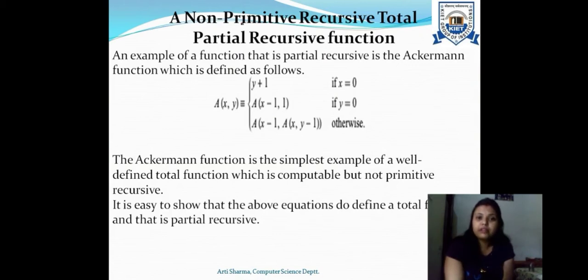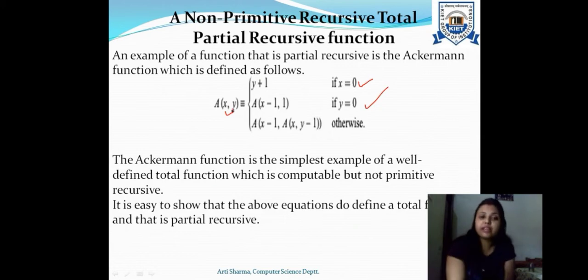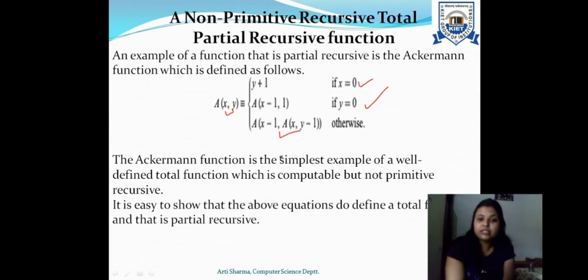A more advanced example of a non-primitive recursive, total partial recursive function is the Ackermann function. It works on two parameters A(x, y). The base conditions are: if x=0, A(x,y) = y+1; if y=0, A(x,y) = A(x−1, 1). Otherwise A(x,y) = A(x−1, A(x, y−1)). Unlike factorial and Fibonacci, which work on a single parameter, the Ackermann function is the simplest example of a well-defined total function that is easily computable but not primitive recursive.